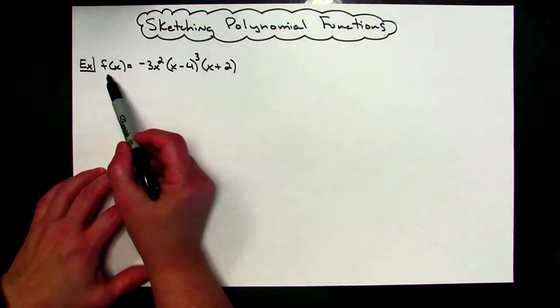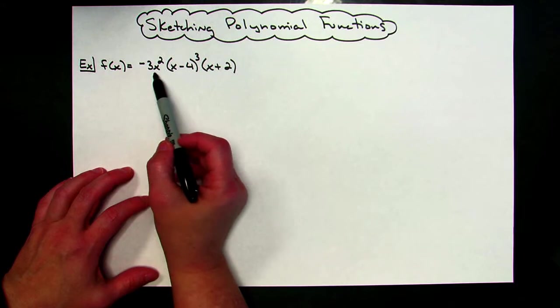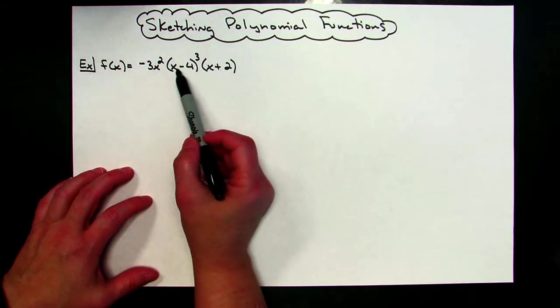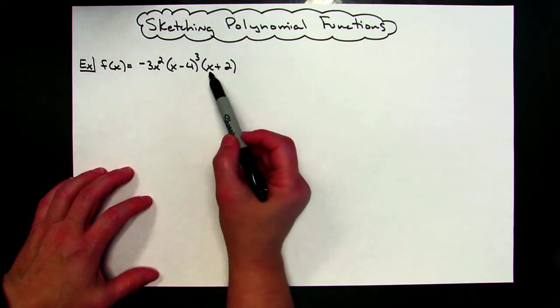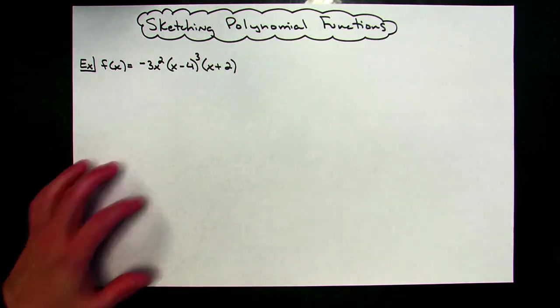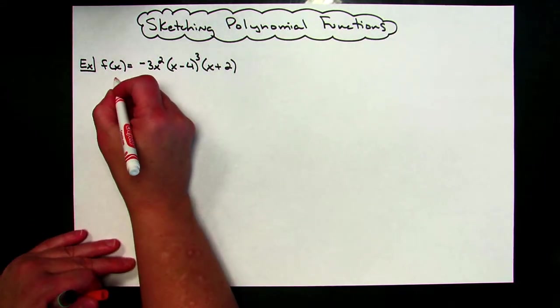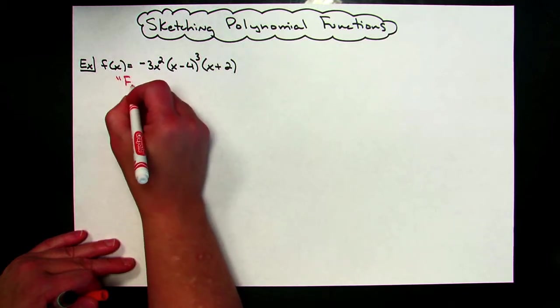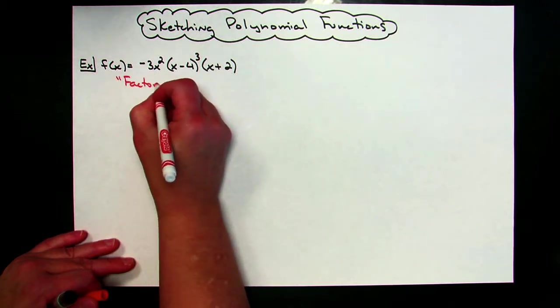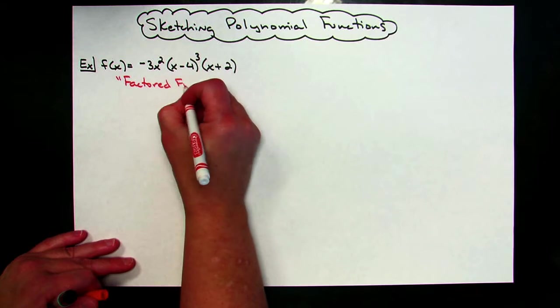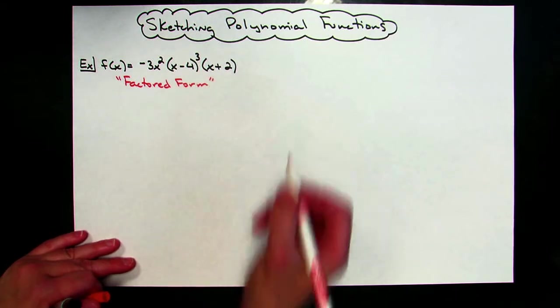All right, so the example I'm going to work out for you today is f of x equals negative 3x squared times the quantity x minus 4 to the third times the quantity x plus 2. Now, as you notice, this particular polynomial function is already in factored form, which is going to ultimately make our job a little bit easier when we go to finding the roots.